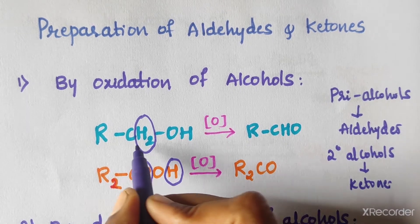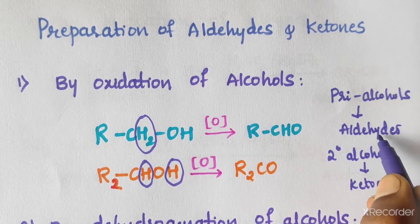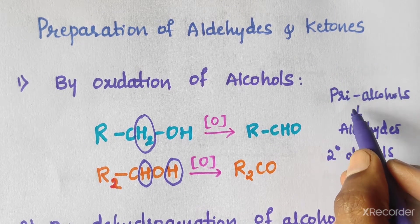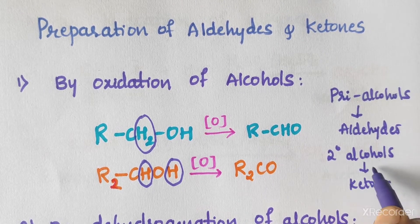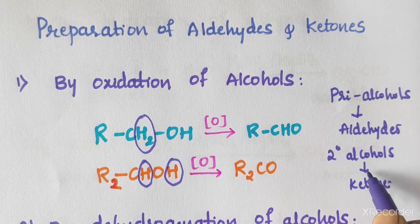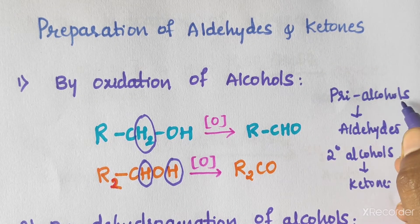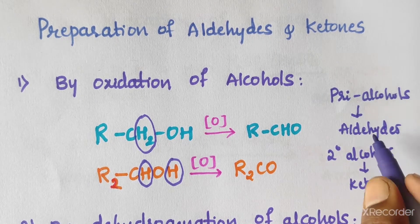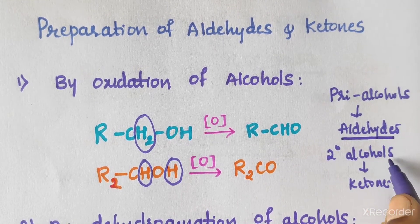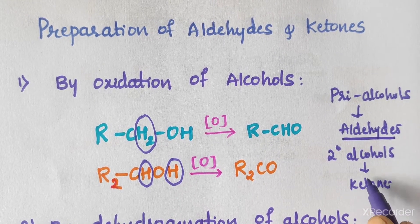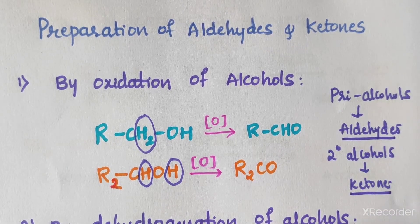Always remember: primary alcohols on oxidation give aldehydes, and secondary alcohols on oxidation give ketones. Keep in mind these two points — primary alcohols give aldehydes and secondary alcohols give ketones.